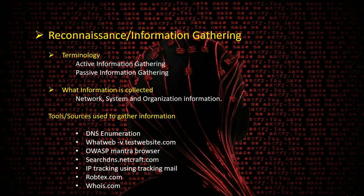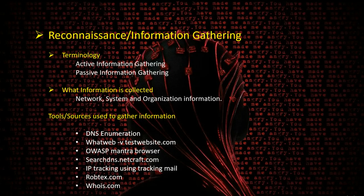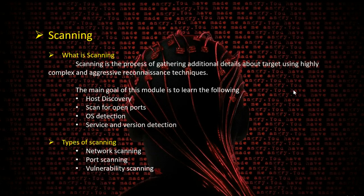We also have IP tracking via email — sending a spam mail to find out a location. Then there's roptex.com for getting website networking information, and whois.com to get information about domain owners. This covers the information gathering phase.